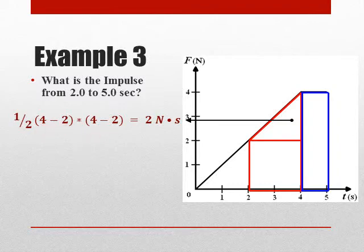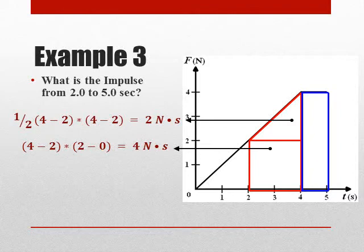And then this bottom part right here, this square, is going to be base times height. It goes from 2 to 4, which is 2 seconds, and then it goes up from 0 to 2, which is 2 newtons. Multiply those together, you get 4 newton-seconds.